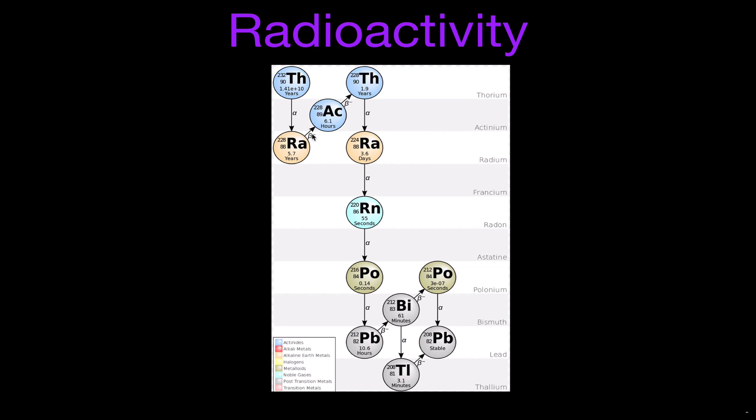And then that will go through beta minus decay, become actinium. Beta minus again will become thorium again. It has the same atomic number, different mass numbers. And then it goes through this chain: alpha decay, alpha decay, alpha decay, beta minus, until it ends up being a stable lead-208 element, or nucleus. And we'll talk about in coming videos a little bit more about the types of radioactive decay and decay equations.